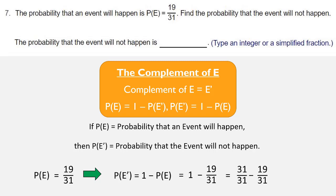1 can be written as 31 over 31, so we get 31 over 31 minus 19 over 31, which is 12 over 31. So the probability of E prime is 12 over 31, and that's your answer.